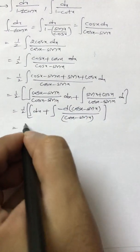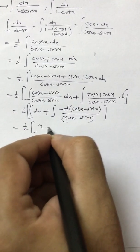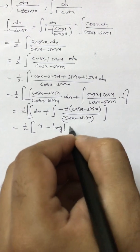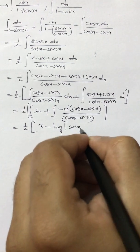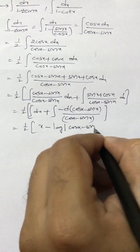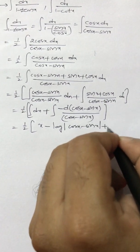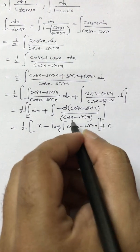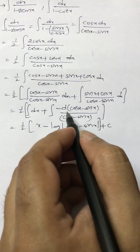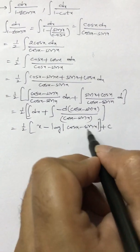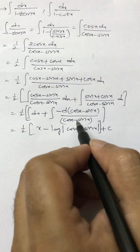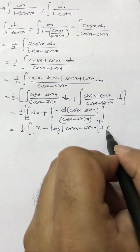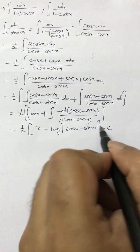So this is 1 by 2 into x minus log mod of (cos x minus sine x) plus c, because we know that integral of dx by x is log mod x. So the answer is 1 by 2 into x minus log mod cos x minus sine x plus c.